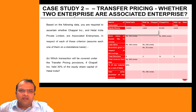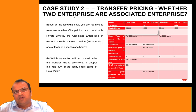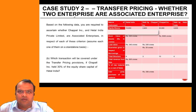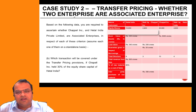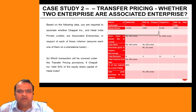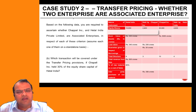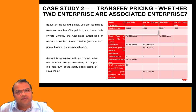One of the most important things in transfer pricing is whether two companies or two entities are associated enterprises. Transfer pricing provisions are applicable only when two entities qualify as associated enterprises. In this example, we're going to look at various situations to determine whether two companies are associated enterprises under different criteria.